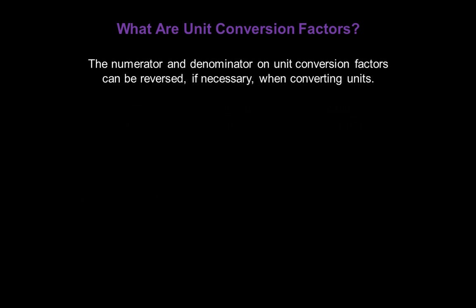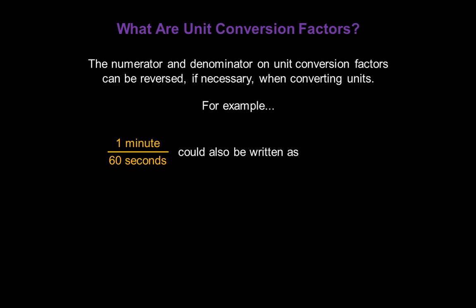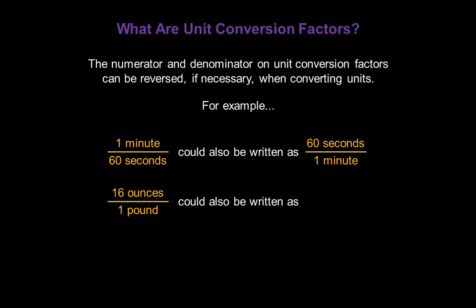The numerator and denominator on unit conversion factors can be reversed or switched, if necessary, when we convert units. For example, one minute over 60 seconds could also be written as 60 seconds over one minute. Sixteen ounces is the same as one pound, and could also be written as one pound is the same as 16 ounces.